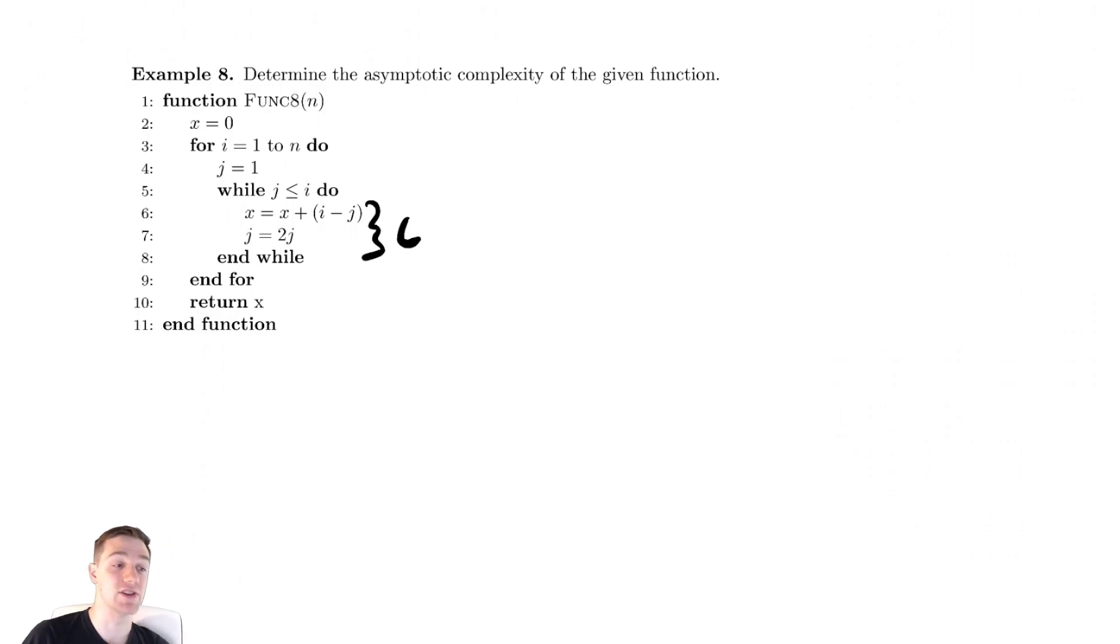The cost of the stuff inside of the while loop is constant. Let's create an iteration table. So, we have iteration, and the loop variable for the while loop, which is j. So, what does j start at? j starts at 1, and then we multiply by 2 every time. So, after 1 iteration, we have 2.